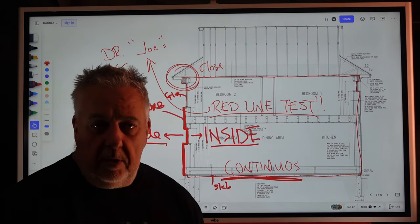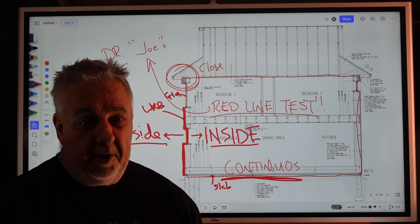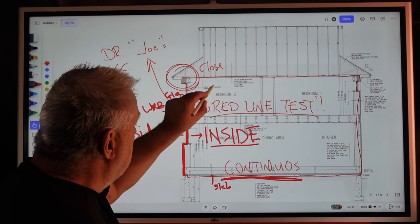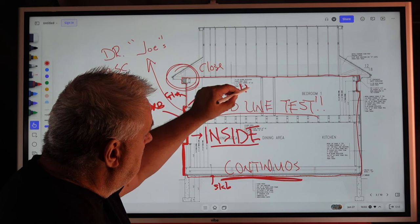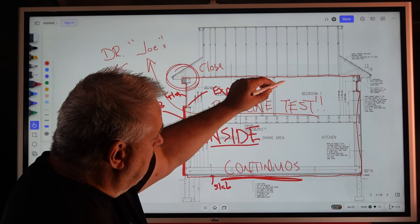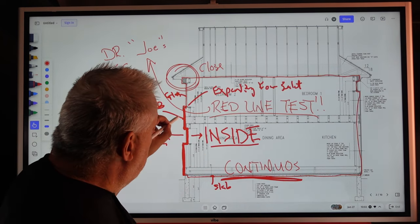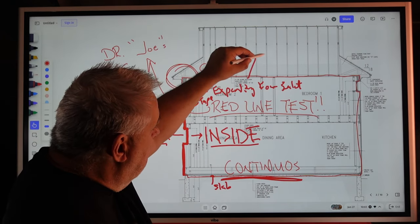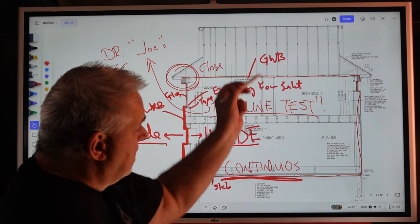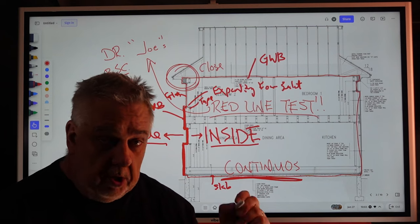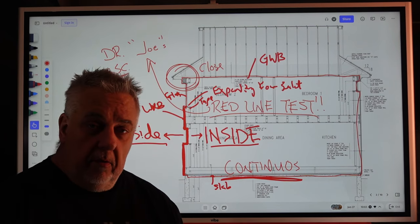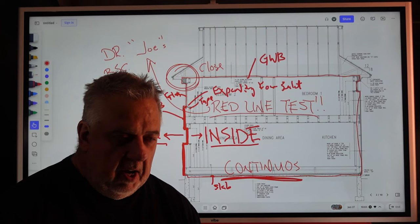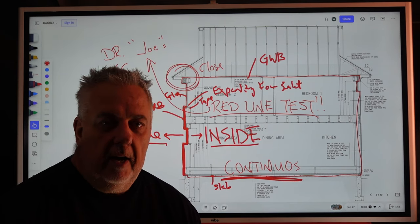When people ask what's the air barrier on a project, it depends on where you're cutting the section. Even at the window it could be expanding foam sealant, it could be tape, it could be gypsum wallboard. One of my favorite quotes of Joe's: 'It's not rocket science, it's building science.'